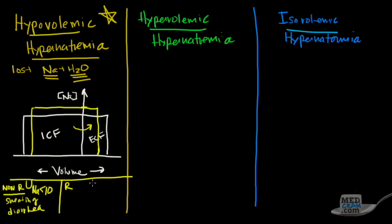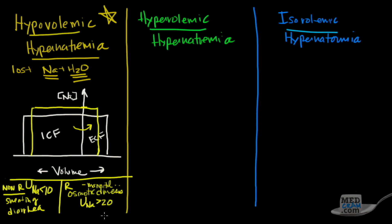For renal causes of hypovolemic hypernatremia, you could have an osmotic diuresis. For example, a patient with a brain bleed on mannitol — the mannitol causes diuresis, losing free water through the kidney and raising sodium concentration. The telltale sign here is that urine sodium concentration is going to be greater than 20.